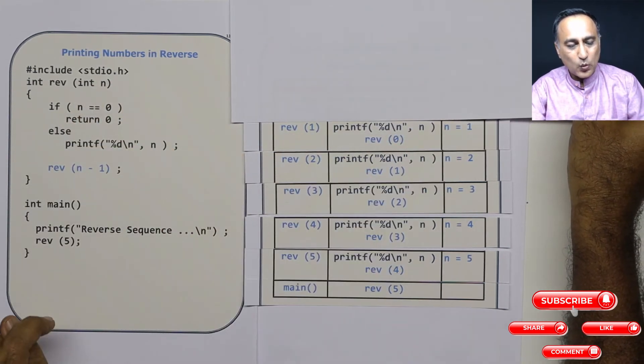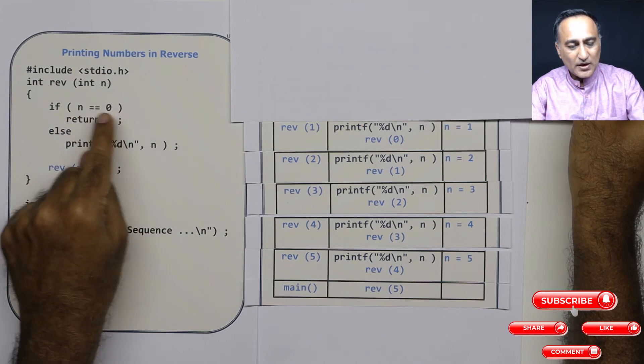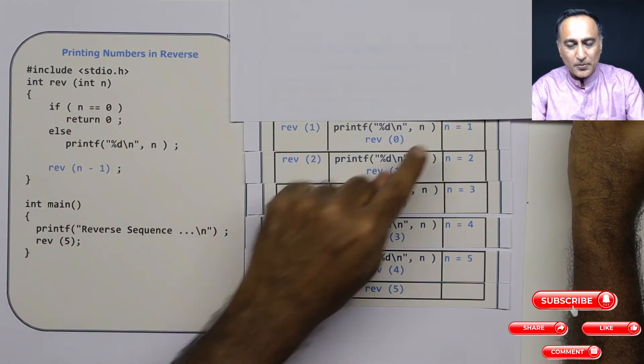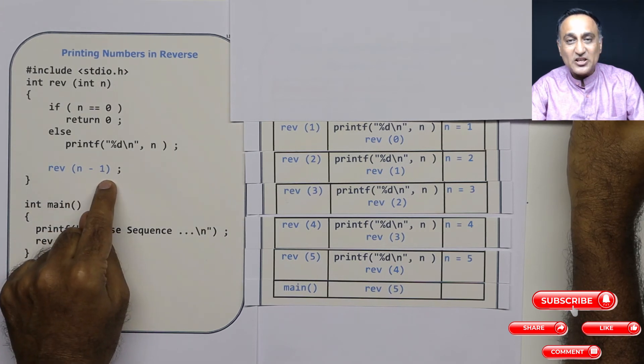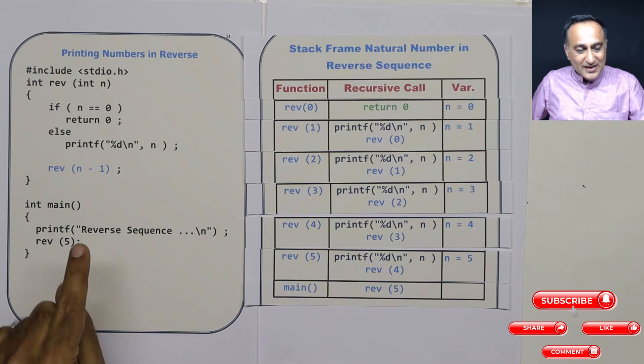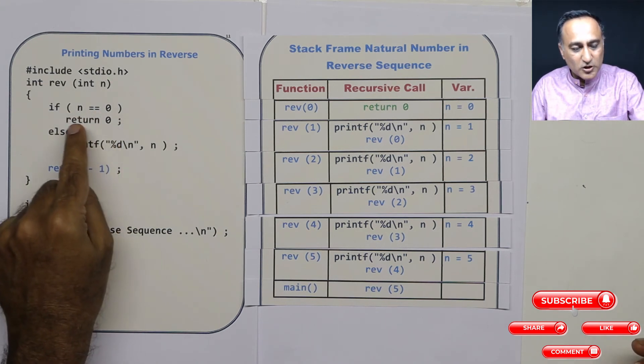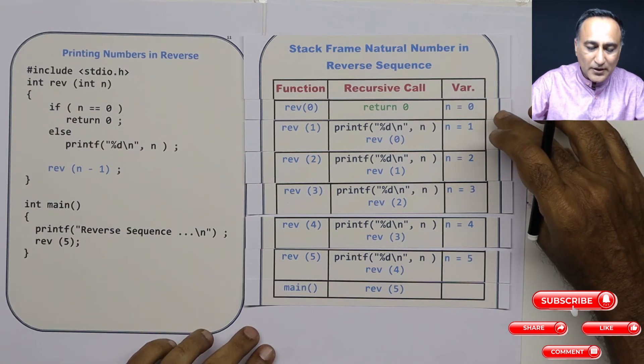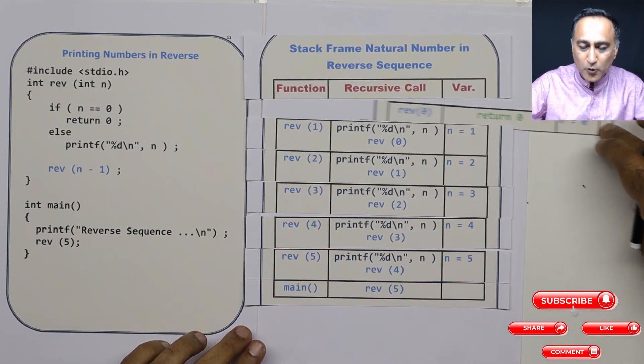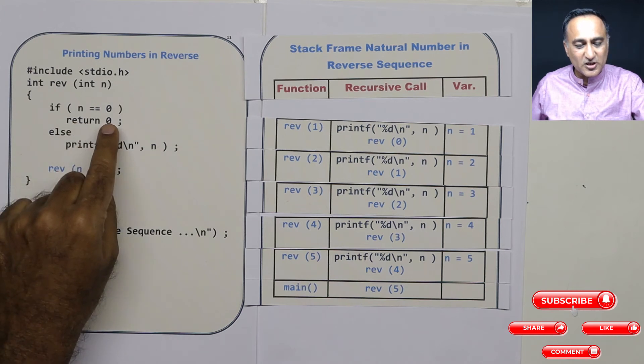The value of n is also going to be 1. 0 equal to 1 or 1 equal to 0 false. I'm going to print 1. Now I'm calling reverse with 1 minus 1 is 0. So now you see what happens. When n is 0, 0 is equal to 0. So this return completes. So I am going to take this out or I am going to pop out this particular function because there's a return 0.